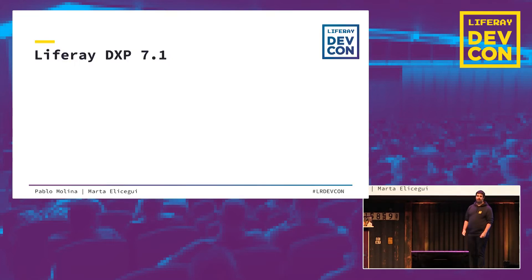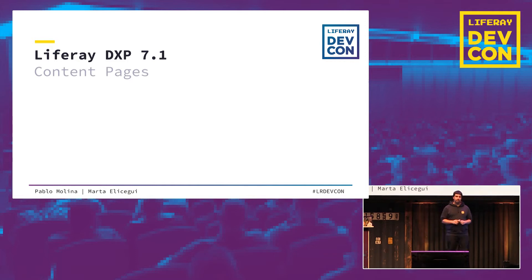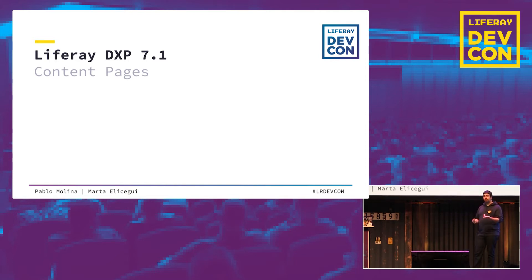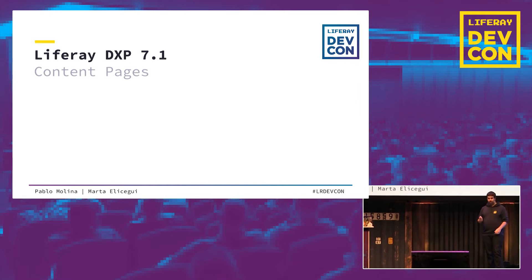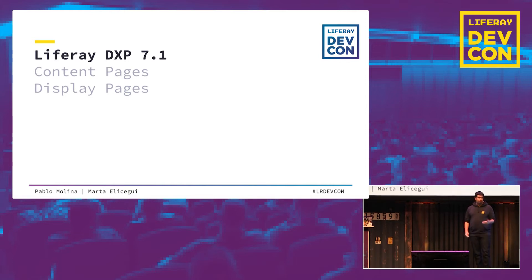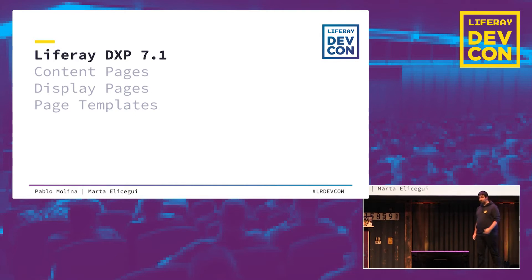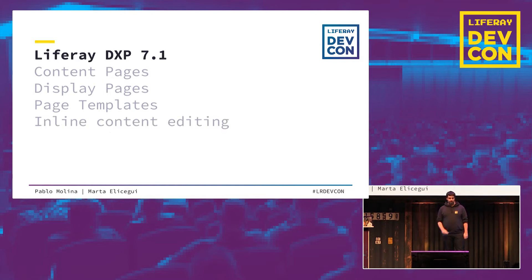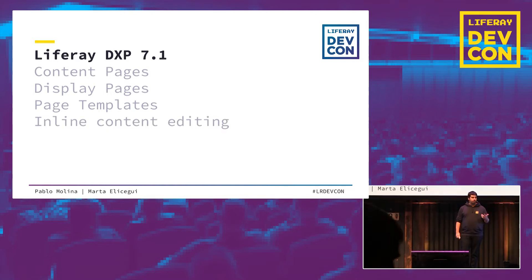With Liferay 7.1, we brought a lot of new features related to content creation. One of these was the content page. These pages are built with fragments — pieces of HTML, CSS, and JavaScript. We also created a new tool called the page editor to allow creating these pages easily. We found that sometimes we need to show actual content, like web contents or blog entries inside these pages, so we created display pages to allow mapping full structures to a page. We also created page templates so you don't start from a blank page every time. And all of these pages and templates support inline content editing, where you can change page content right in all editable fields.